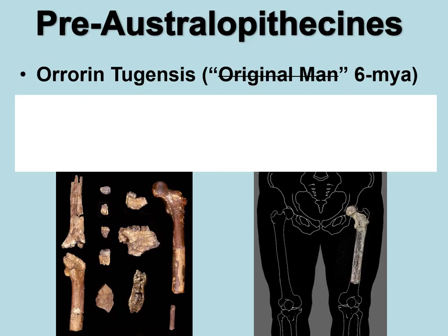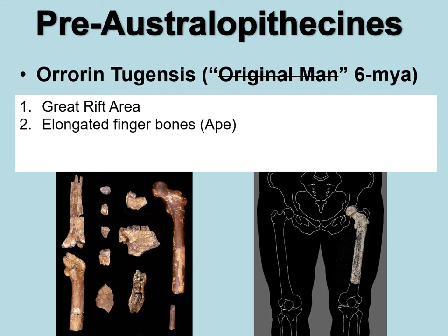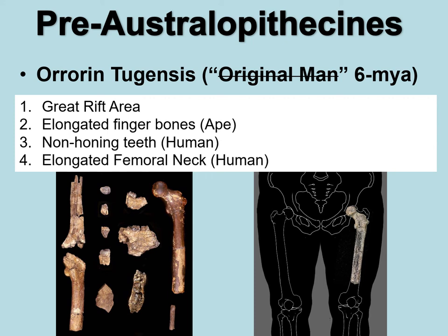Another pre-Australopithecine specimen lumped with the Ardipithecus group is Orrorin tugenensis — which originally means 'original man,' though we know it isn't. Found in the Great Rift Valley area, it had elongated finger bones like an ape but non-honing teeth more like an Australopithecine or Homo. It had an elongated femoral neck much like genus Homo, and showed bony density buildup on top of the femur — evidence of significant forces placed on the bone through bipedal locomotion, consistent with Wolff's Law.